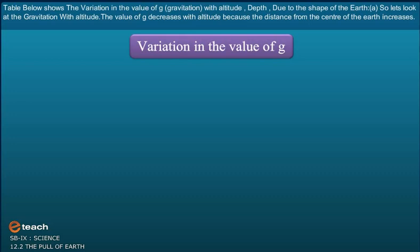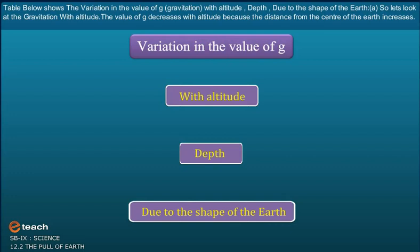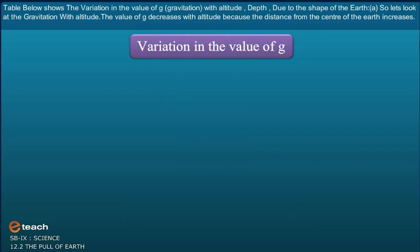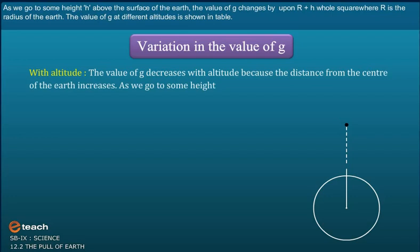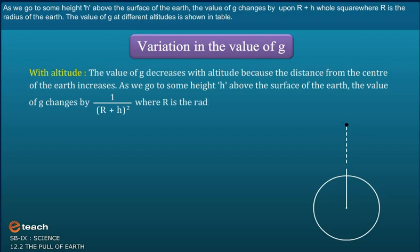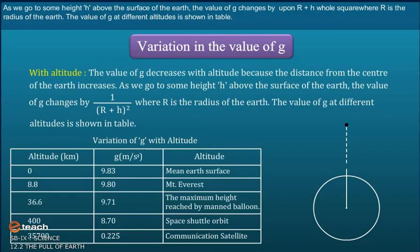The table below shows the variation in the value of g with altitude, depth, and due to the shape of the Earth. The value of g decreases with altitude because the distance from the center of the Earth increases. At a height H above the surface of the Earth, the value of g changes by 1/(R+H)², where R is the radius of the Earth. The value of g at different altitudes is shown in the table.